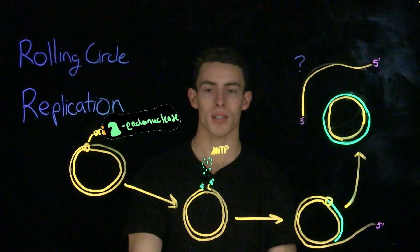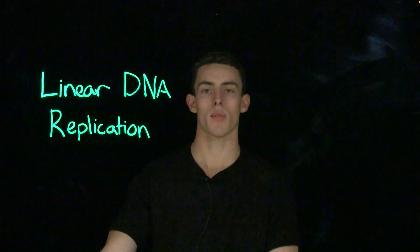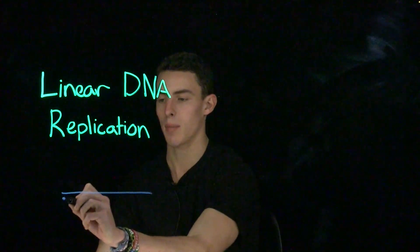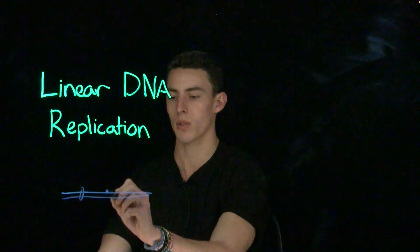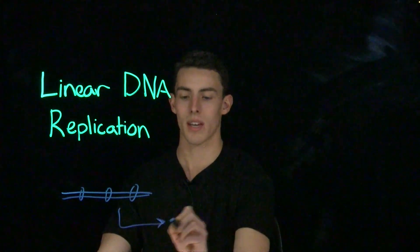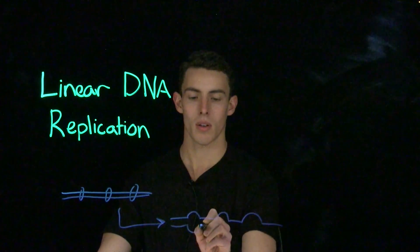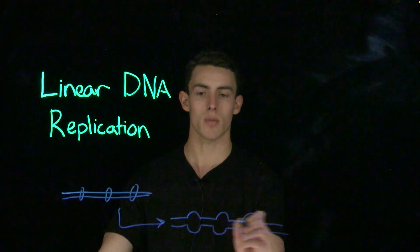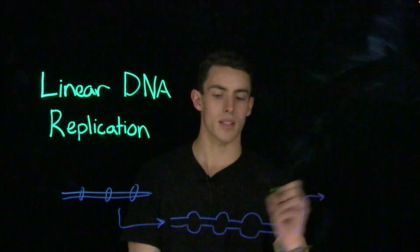Now let's take a look at linear DNA replication. Linear DNA replication is similar to circular DNA replication in that it is the semi-conservative replication of a double-stranded molecule of DNA using each strand as a template. However, a linear strand of DNA will have multiple origins of replication, and thus during the actual process of replication, we will see multiple replication bubbles. Replication continues until these replication bubbles meet each other, resulting in the formation of new strands of DNA.